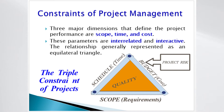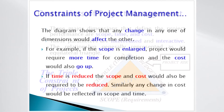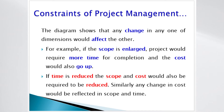The relationship is generally represented as an equilateral triangle. It is evident that any change in any one of the dimensions would affect the others. For example, if the scope is enlarged, the project would require more time for completion and the cost would also go up. If time is reduced, the scope and cost would also be required to be reduced. Similarly, any change in cost would be reflected in scope and time.